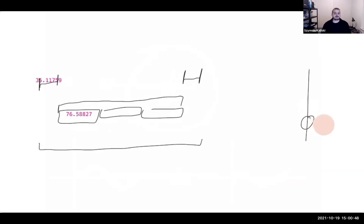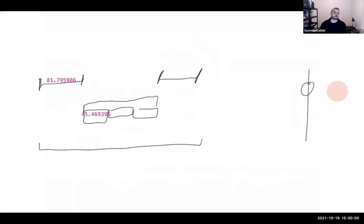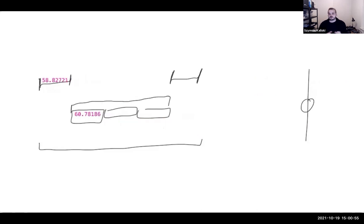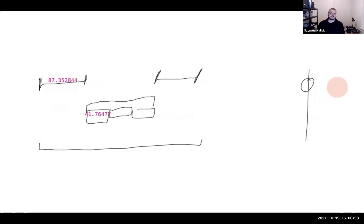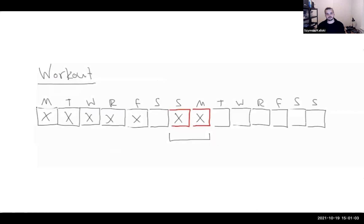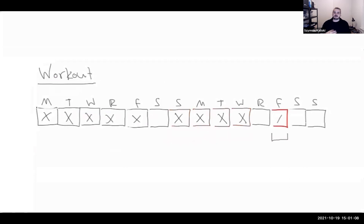Inkbase can also be helpful in sketching out UI elements. Here we're playing around with a tab component, controlling the number of tabs and margin widths with a little hand-drawn slider created ad hoc for the task at hand. On the other side, we could offload mental bookkeeping tasks like counting how long the current streak is in a workout tracker.